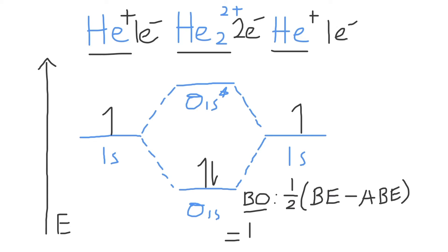So the bond order for He₂ 2+ is equal to one-half times the bonding electrons, of which there's two, minus the antibonding electrons, of which there's none. One-half of two is equal to one, which tells us that a single bond exists in He₂ 2+ molecule, or that there is one electron pair, which consists of two electrons.